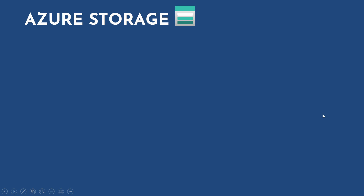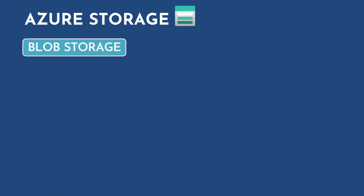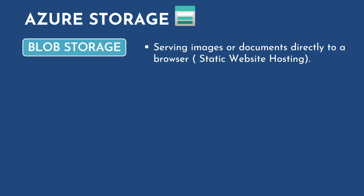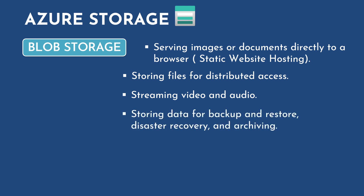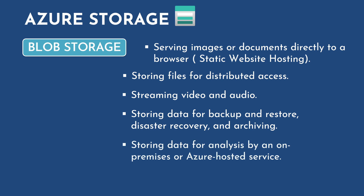Blob storage is used to serve images or documents directly to a browser, such as static website hosting using a content delivery network. It is also used to store files for distributed access, and you can stream videos and audios directly from your blob storage. It is also used to store data for backup and restore, disaster recovery, and for archiving purposes. You can also store data for further analysis by an on-premises or Azure-hosted service.